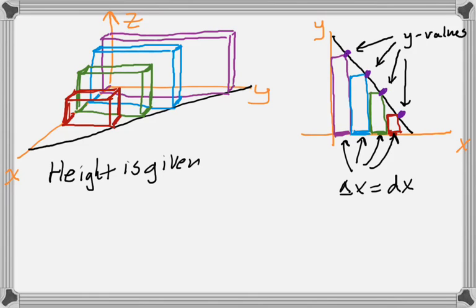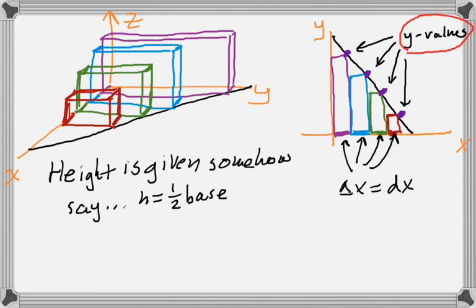And then the height is somehow given to you. So maybe you're told that the height is one half of the base, but then the question becomes, well, what base? And if you go back over to this x-y picture, those y values, the heights that we determine there are actually the bases that they're referring to.